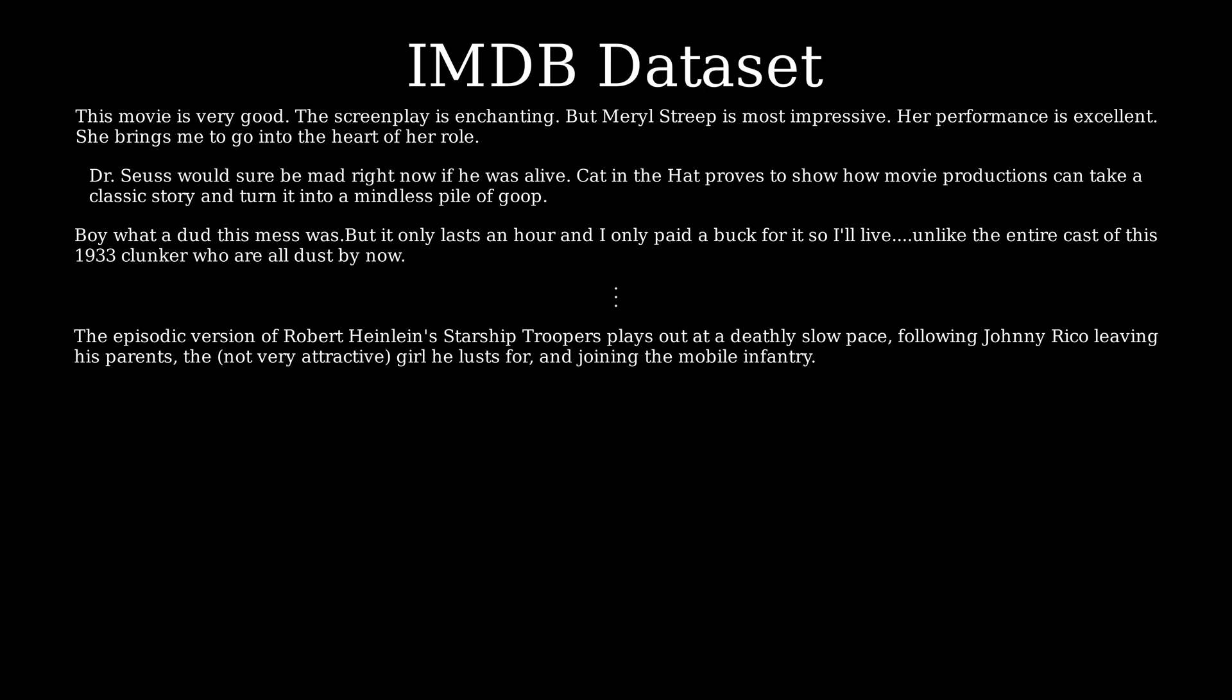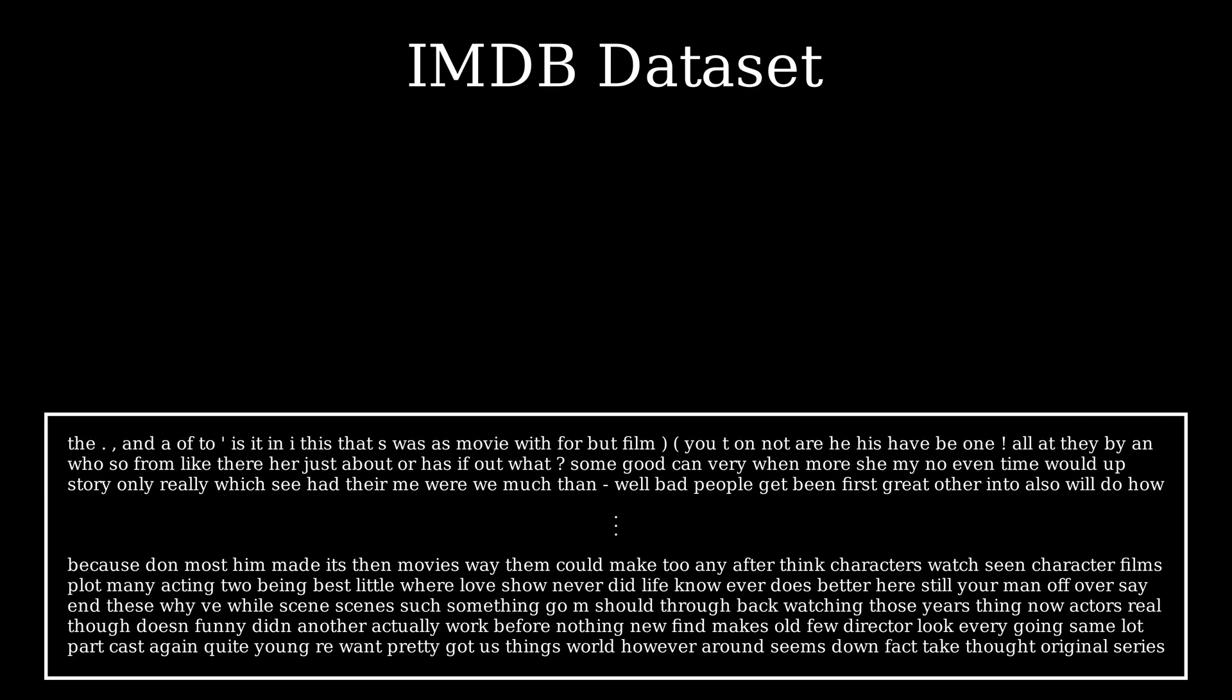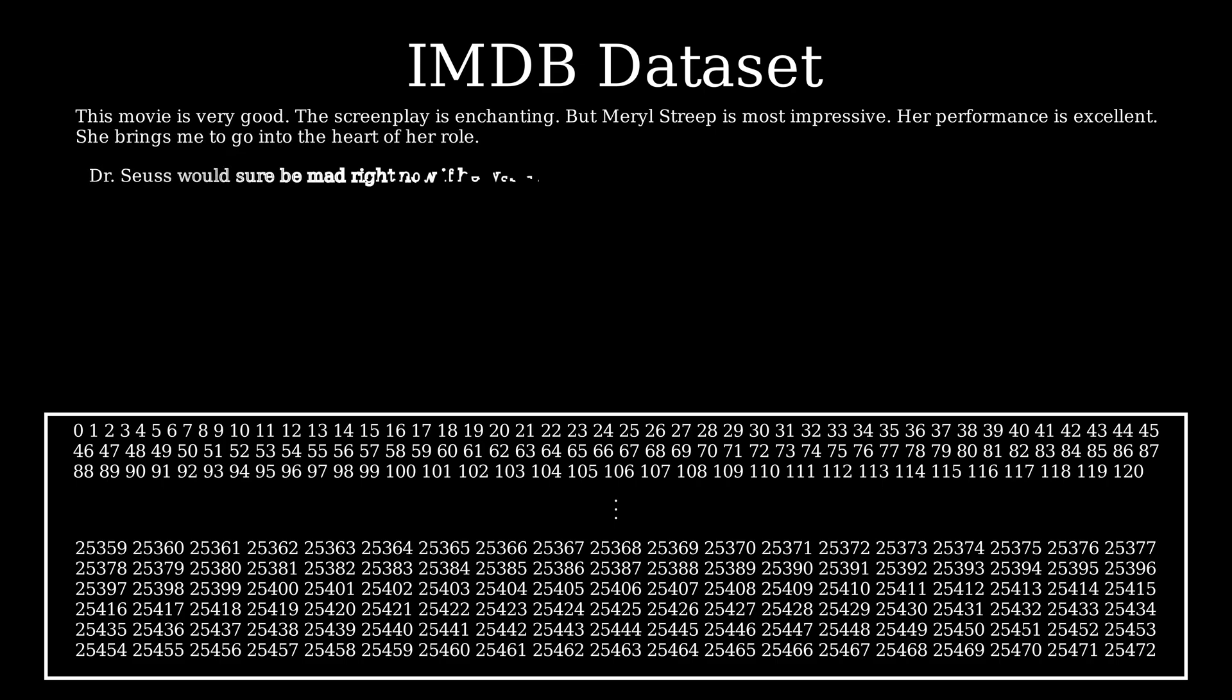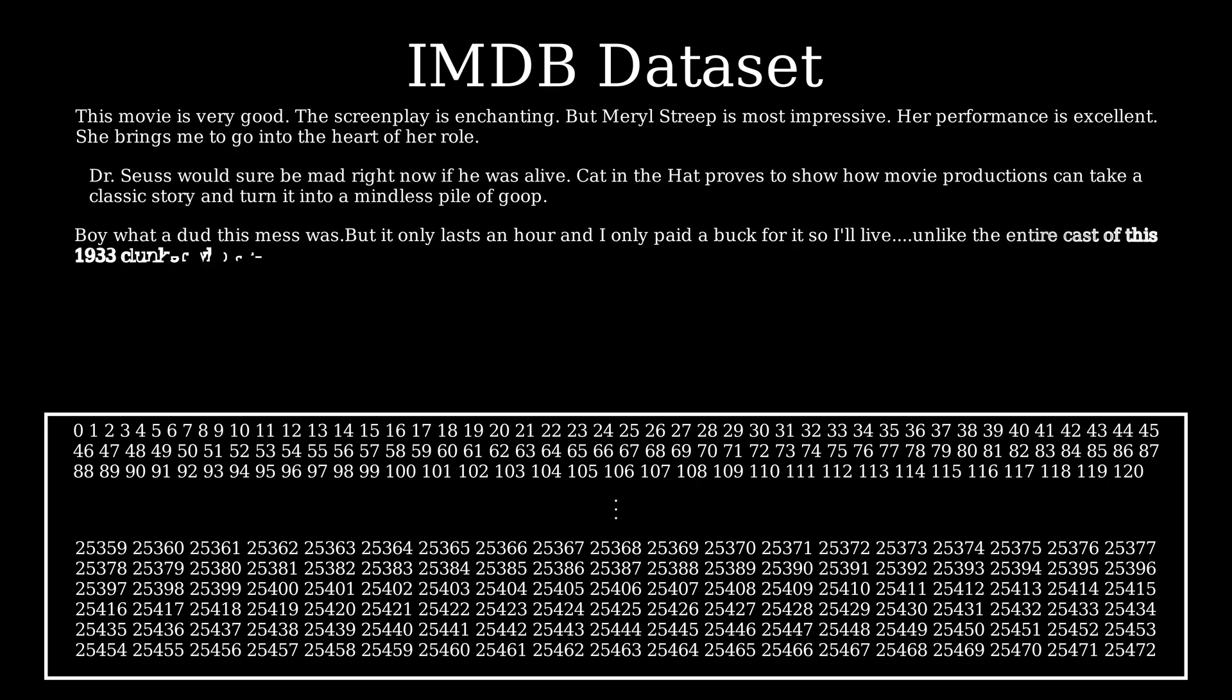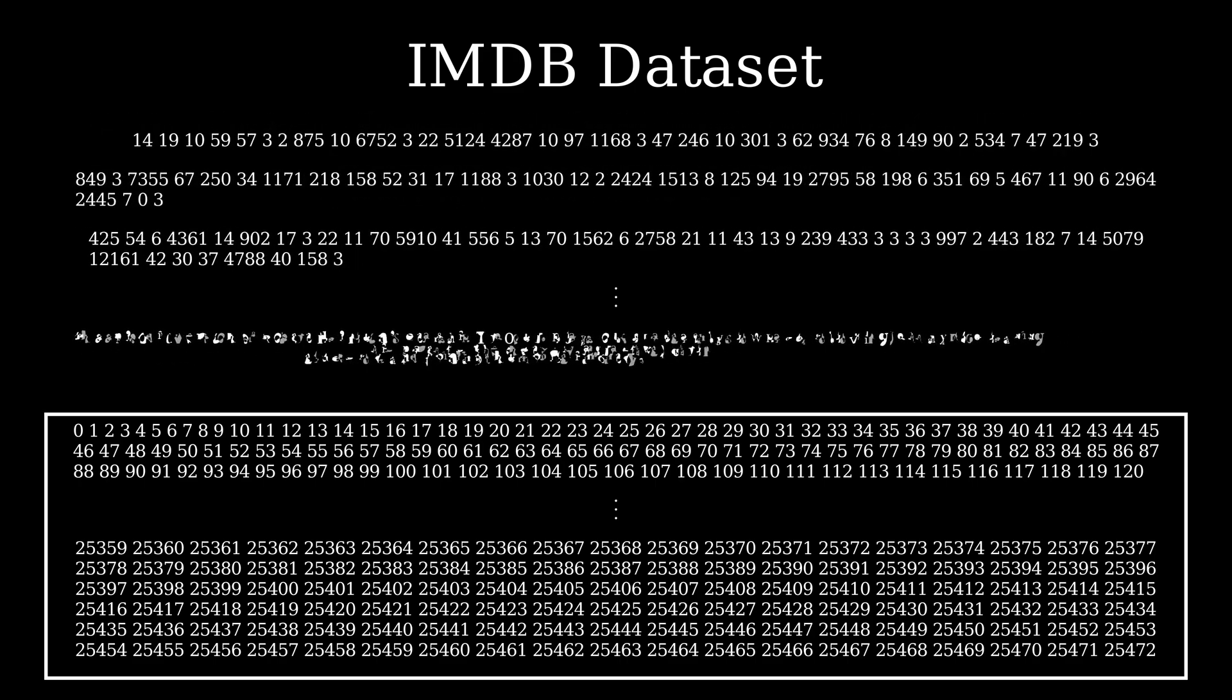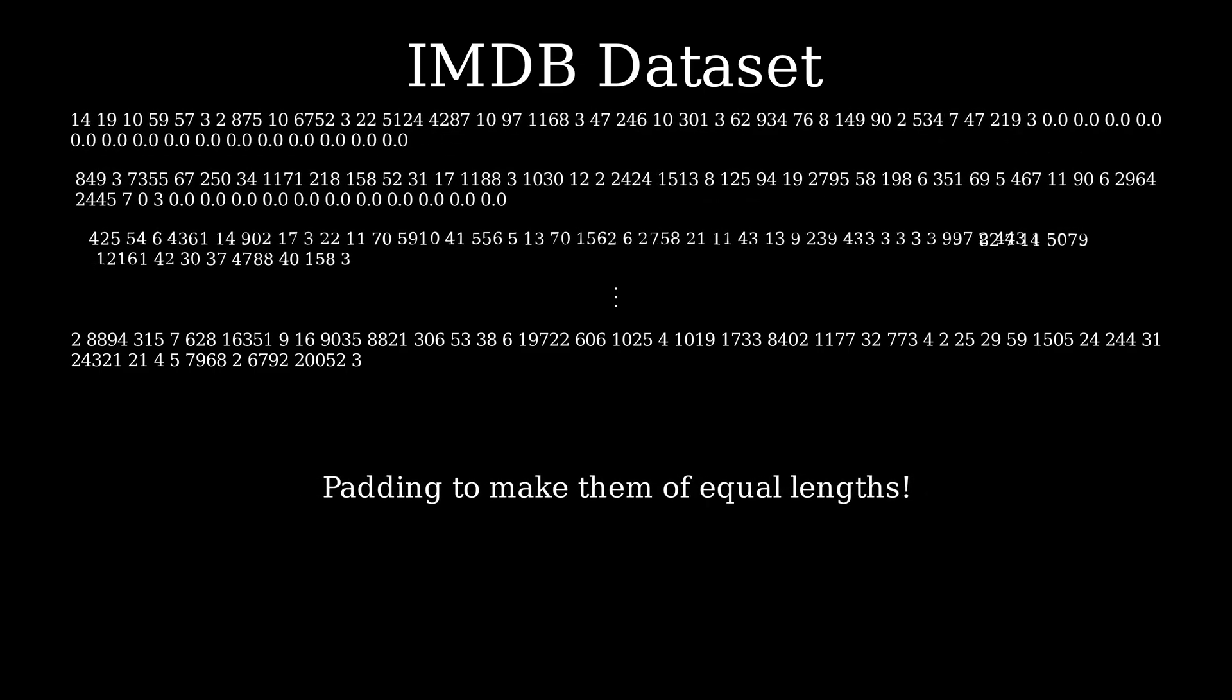We know that computers can only make sense of numbers, so we have to find a way to do this. A very common way is just to collect all the individual words in the dataset and store them to create a vocabulary. Now we can simply assign all of them a unique number. Looking at this vocabulary, we can map any review to a set of numbers. So finally, we have a bunch of sequences of numbers that essentially represent a sentence. But there's a problem with this: all these are of different lengths, and to feed these into a transformer and utilize parallelism, we have to make sure that they are of same lengths. This can be done by simply padding each sequence with zeros at the end.